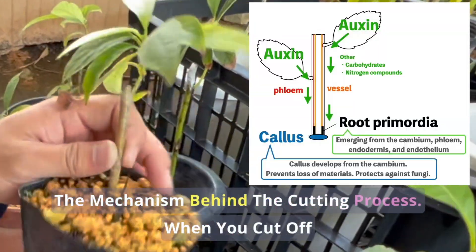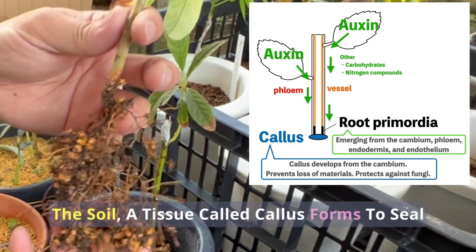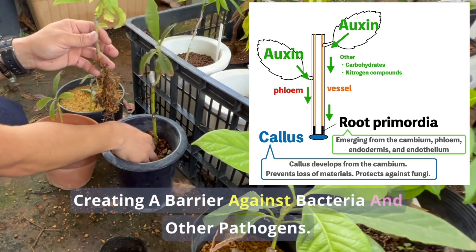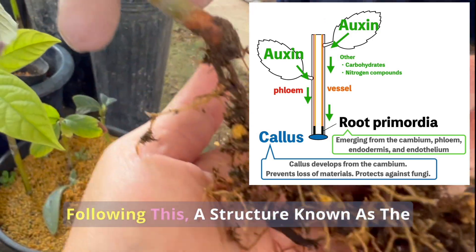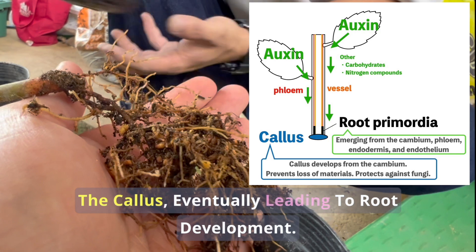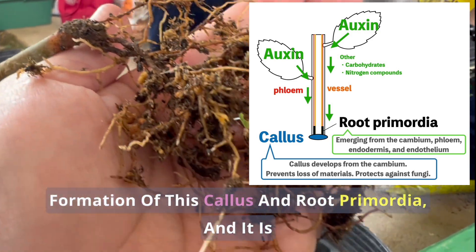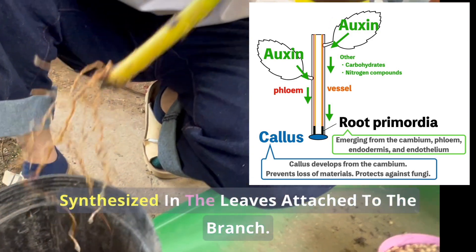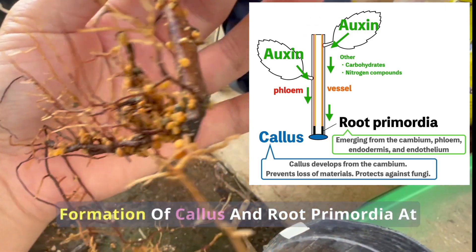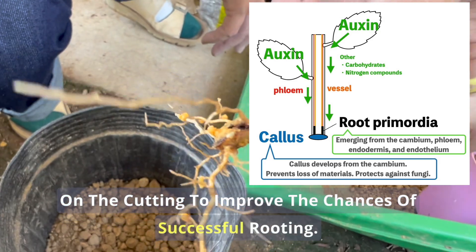The mechanism behind the cutting process: when you cut off part of a tree branch and insert it into the soil, a tissue called callus forms to seal the cut, preventing the internal moisture from escaping and creating a barrier against bacteria and other pathogens. Following this, a structure known as the root primordia begins to form slightly above the callus, eventually leading to root development. The plant hormone auxin plays a crucial role in the formation of this callus and root primordia, and it is synthesized in the leaves attached to the branch. The synthesized auxin flows downwards, promoting the formation of callus and root primordia at the base of the cutting. This is why it's essential to leave some leaves on the cutting to improve the chances of successful rooting.